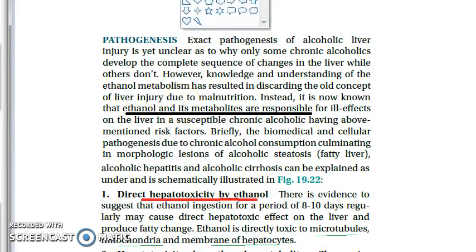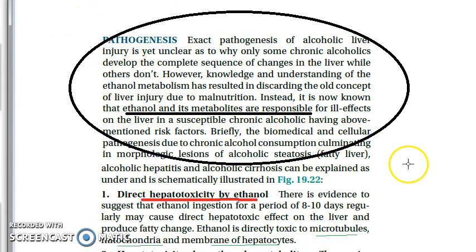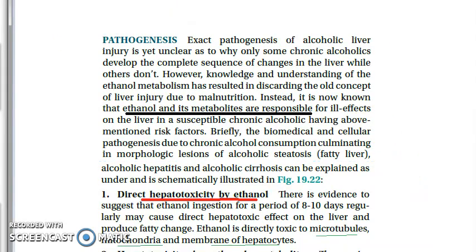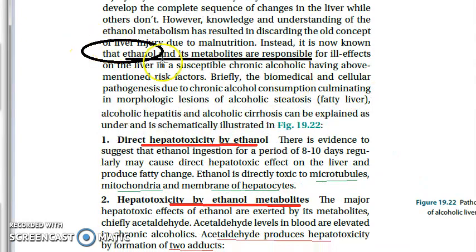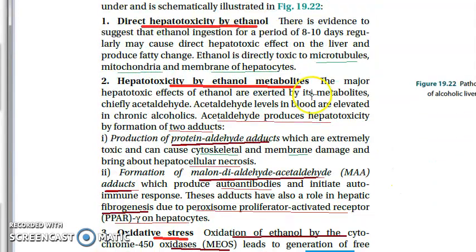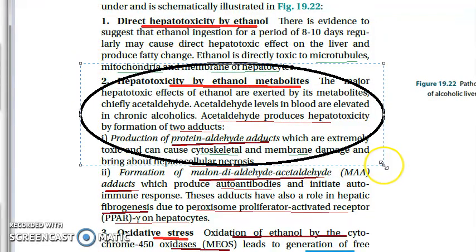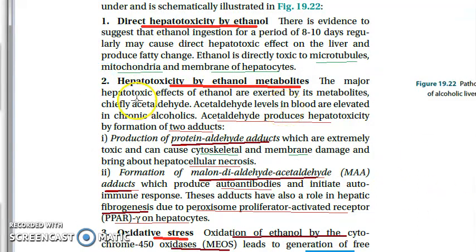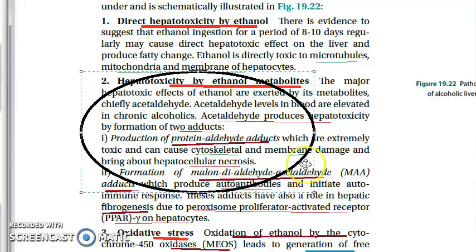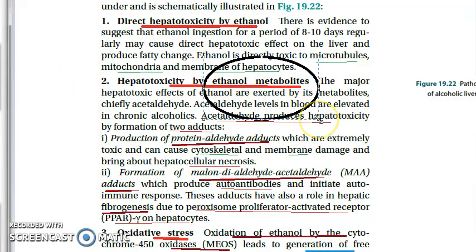In the last video we started with the pathogenesis of alcoholic liver disease and covered the first five of ten points. Let's revise them. First: direct hepatotoxicity by ethanol — ethanol damages the microtubules, mitochondria, and membranes of hepatocytes. Second: hepatotoxicity by ethanol metabolites — acetaldehyde and other metabolites are also very toxic and cause hepatotoxicity.